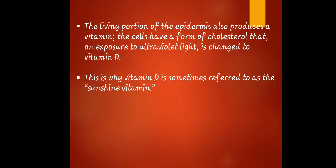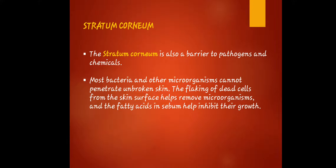The living portion of the epidermis also produces vitamin D. The cells have a form of cholesterol that, on exposure to ultraviolet light, is changed to vitamin D. This is why vitamin D is sometimes referred to as the sunshine vitamin. Vitamin D is produced in the stratum germinativum, also called the stratum basale — the innermost layer of the epidermis.